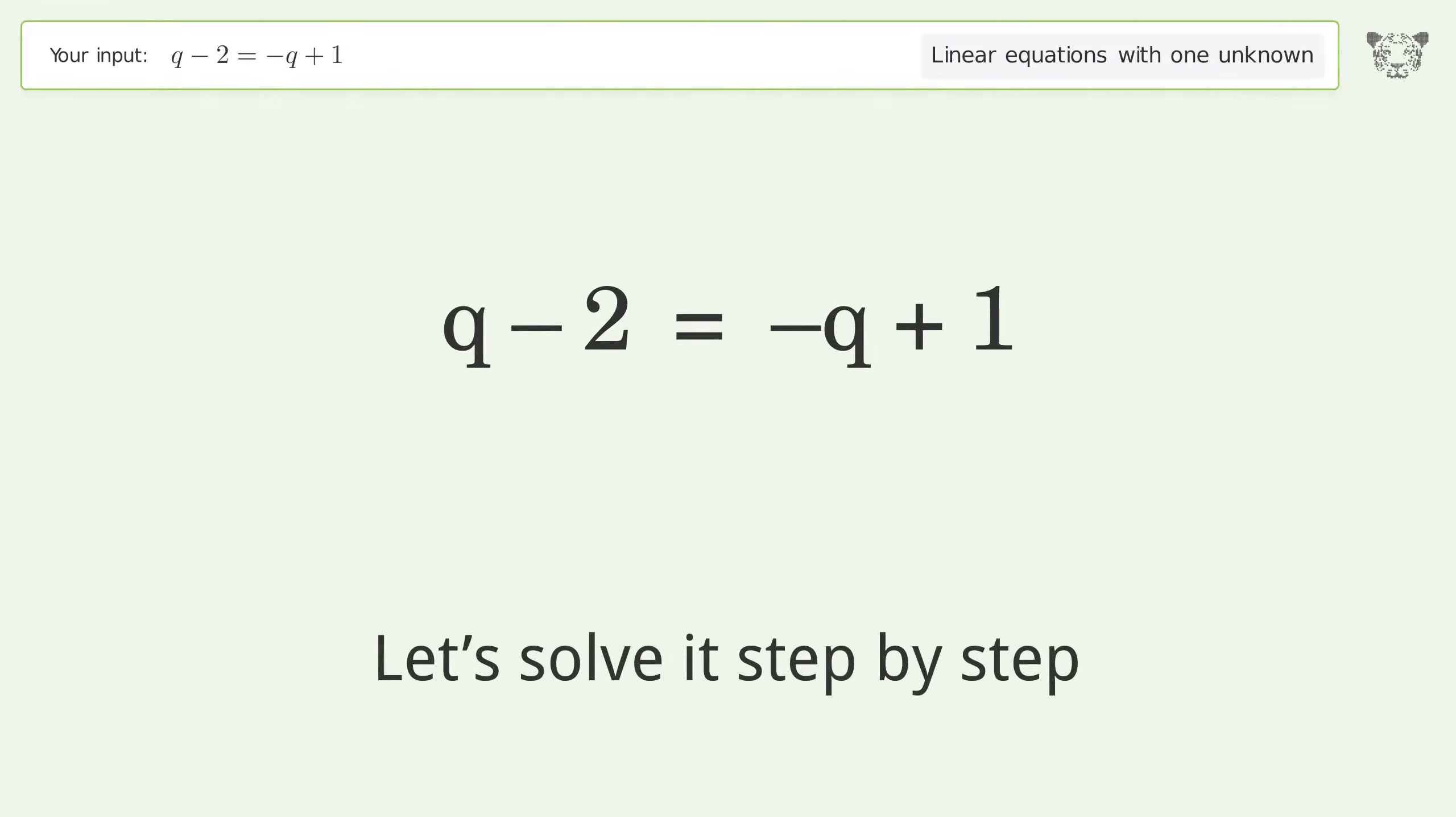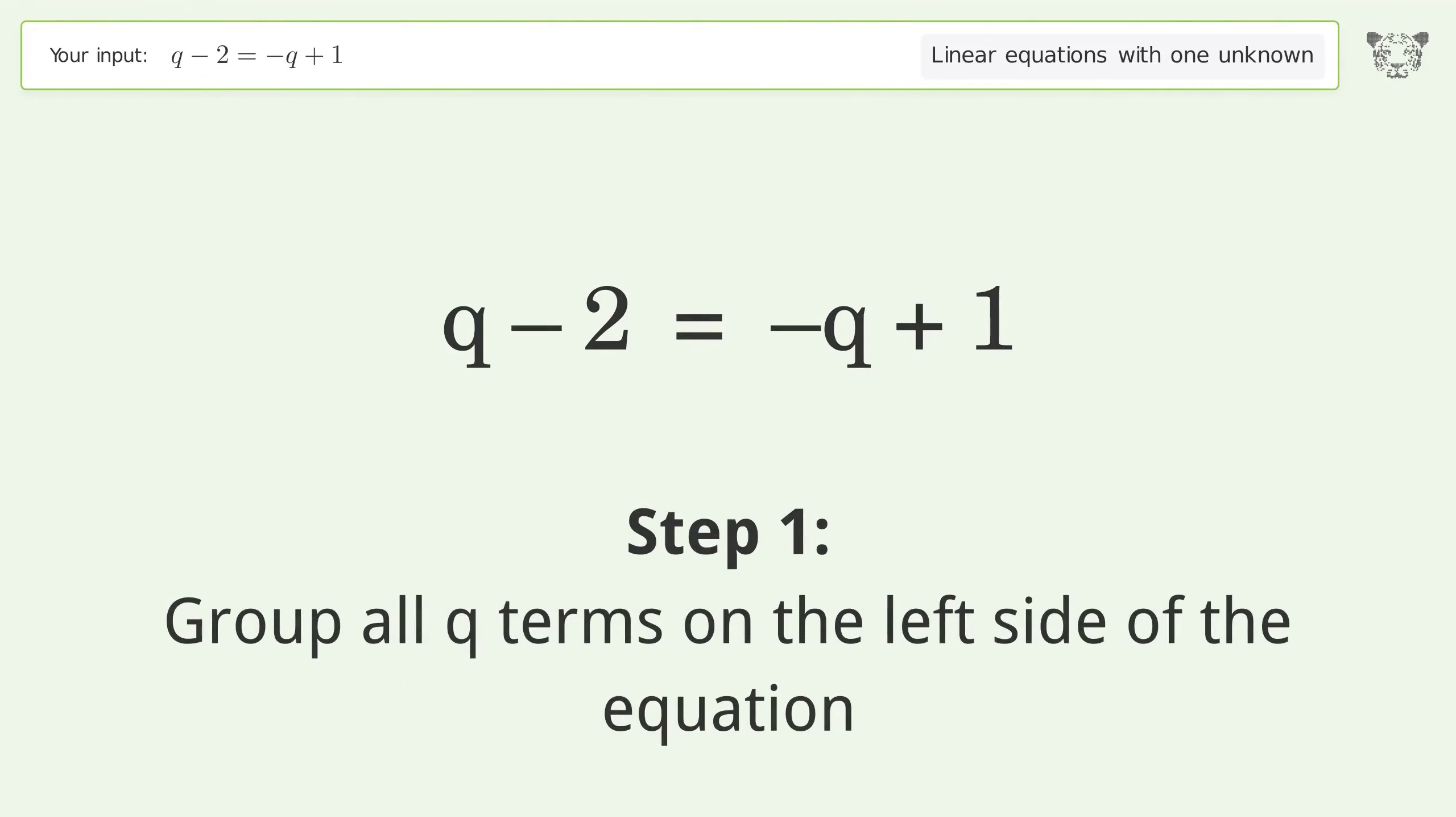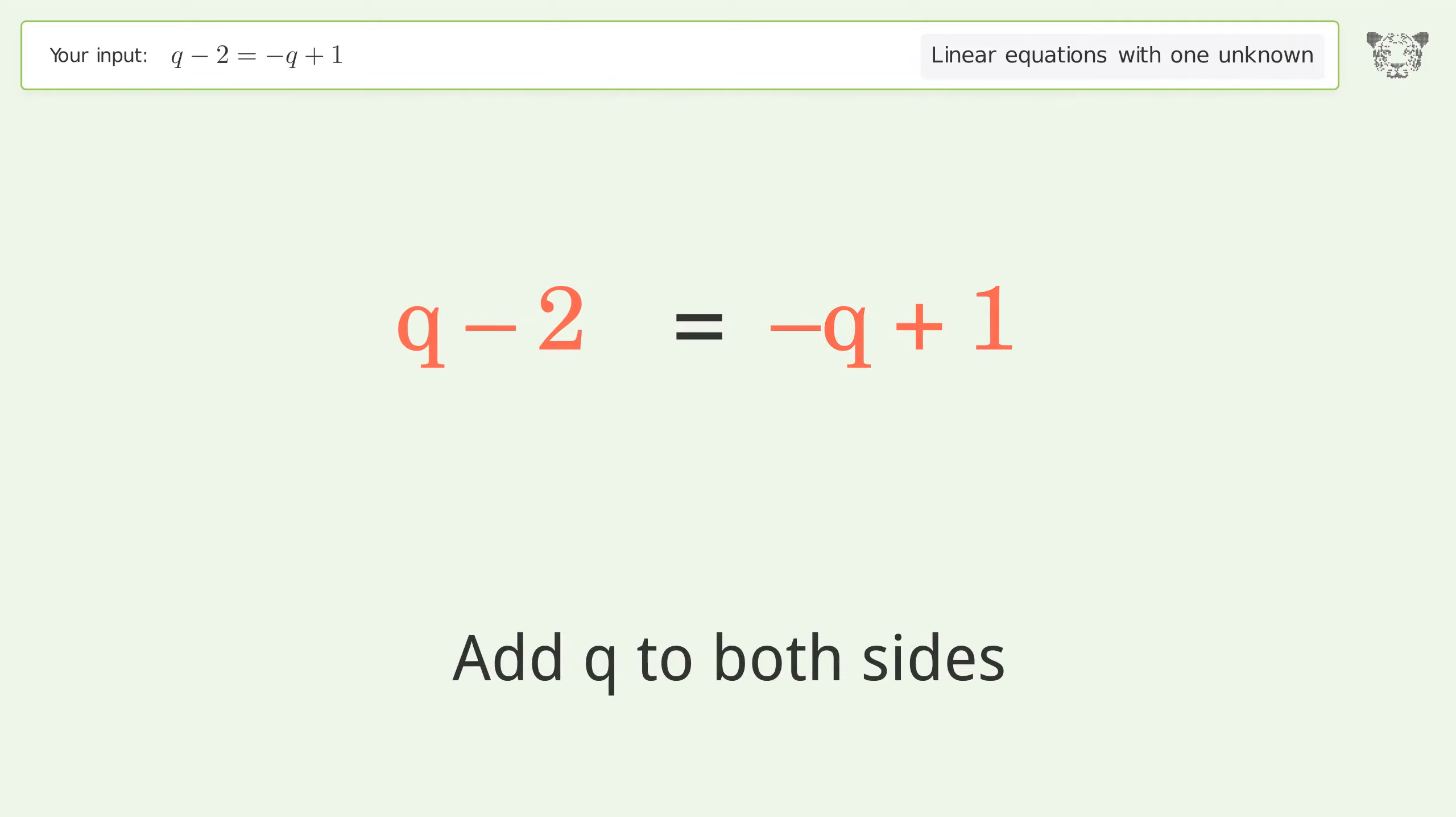You asked Tiger to solve. This deals with linear equations with one unknown. The final result is q equals 3 over 2. Let's solve it step by step.